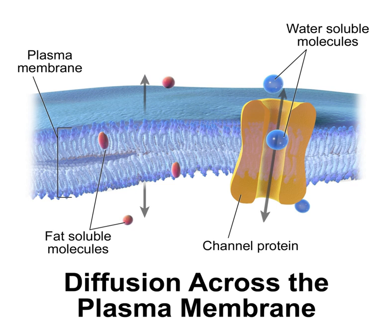The cell membrane controls the movement of substances in and out of cells and organelles. It is selectively permeable to ions and organic molecules. Cell membranes are involved in cellular processes such as cell adhesion, ion conductivity, and cell signaling, and serve as the attachment surface for the cell wall, the glycocalyx, and the cytoskeleton. In synthetic biology, cell membranes can be artificially reassembled.